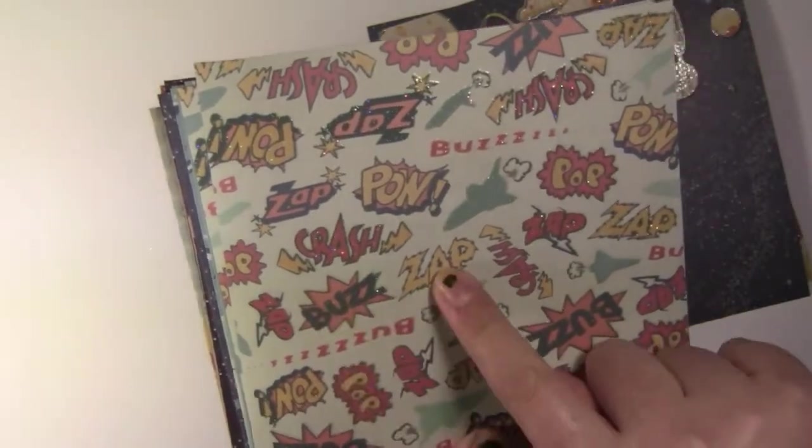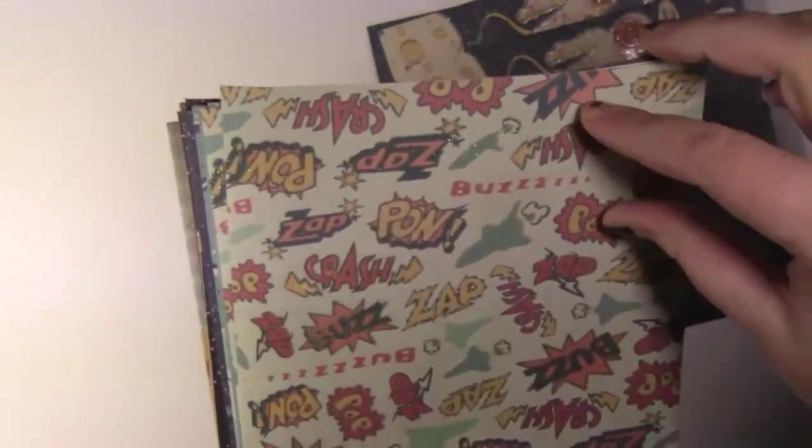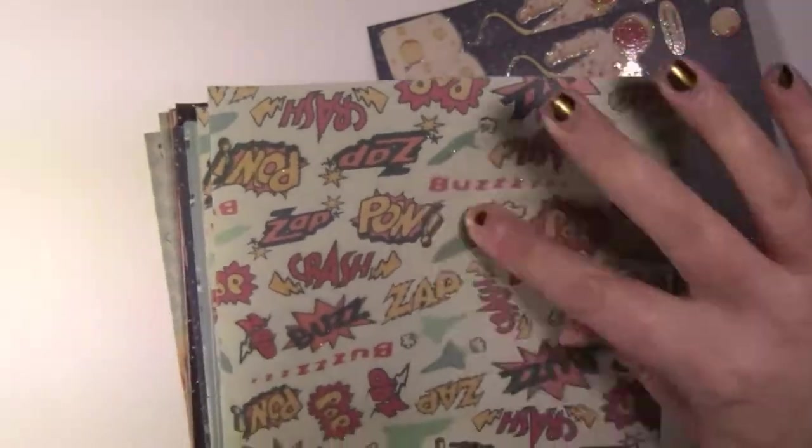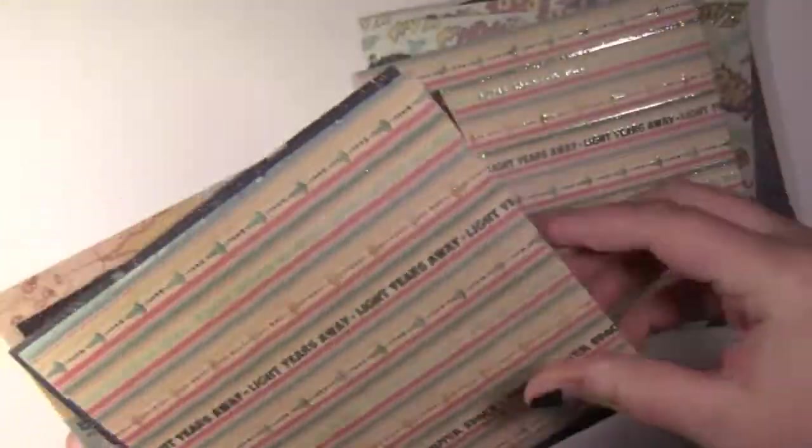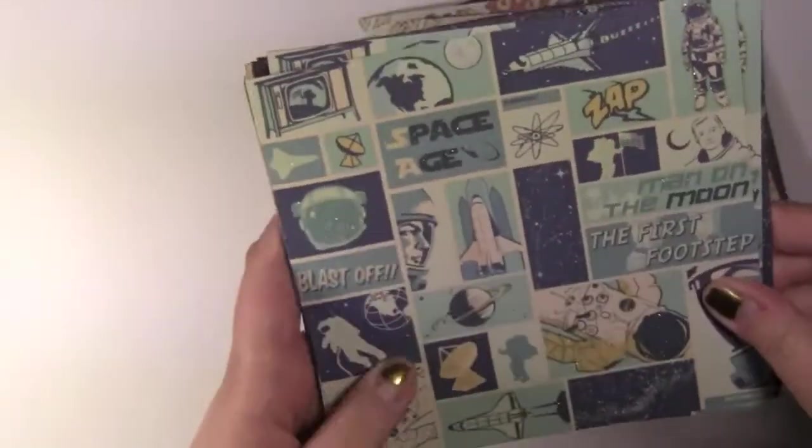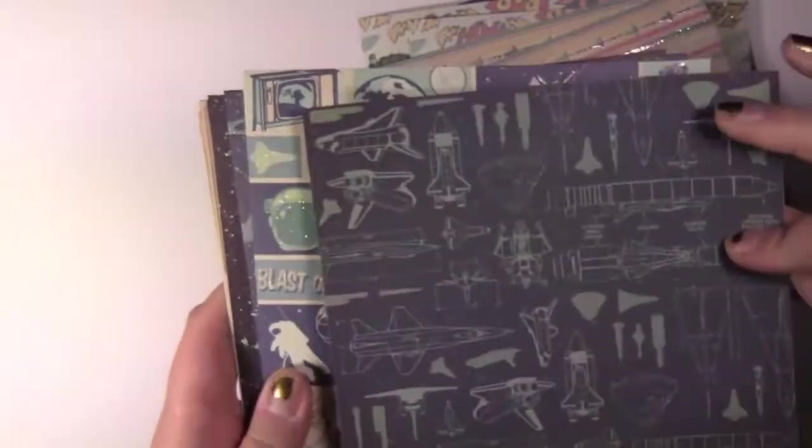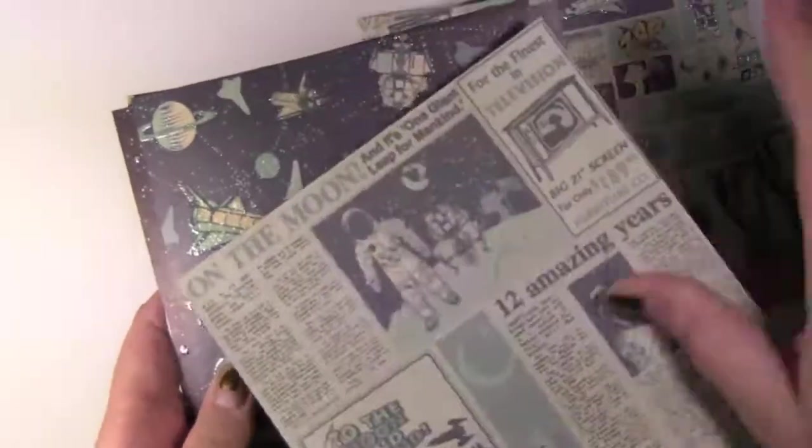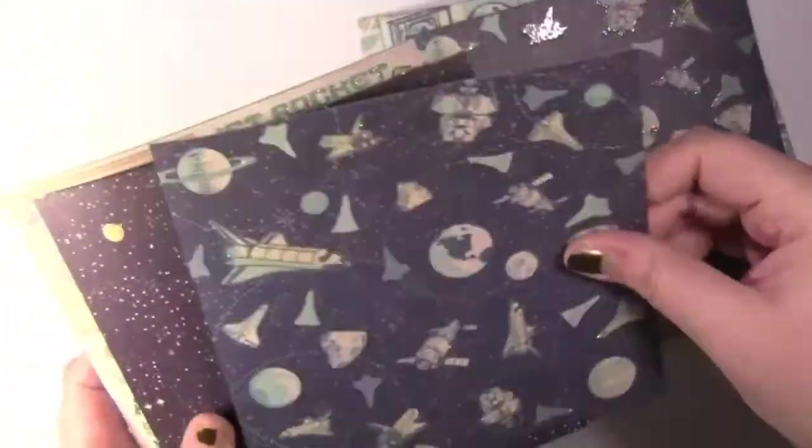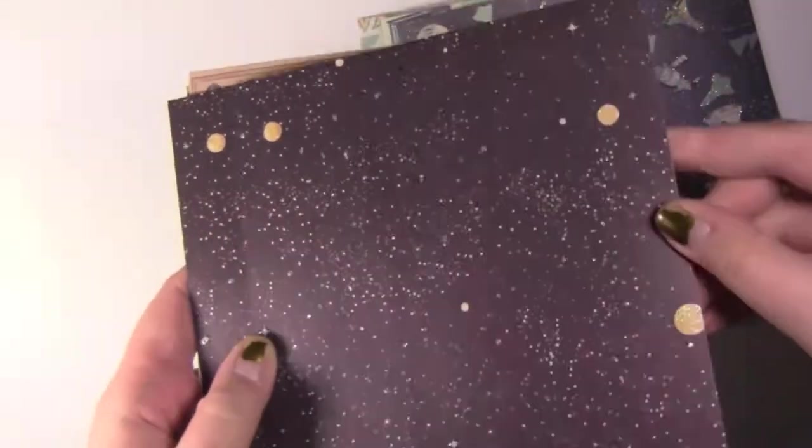I think she would really like this one. It says like bow, bow, buzz, zap, crash, pow. And again it's all glittery and raised and that one's like psychedelic. Then we have a striped one. It says light years away and raised with glitter. This one's just lined so they can write things. Then we have a blue, men on the moon. That one's really cool too. That one's like a newspaper. That's cool. It's upside down. But that's really cool.